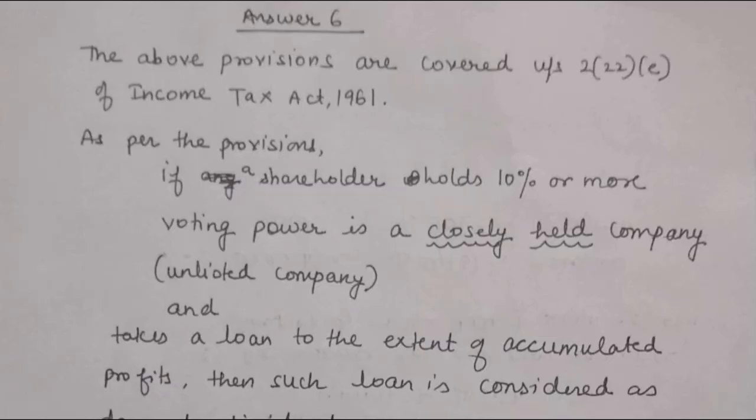Toh aap isko apni presentation mein kaise dikhane wale hain? Aap batayein that this is a closely held company, a shareholder holding 10% or more voting power is taking a loan or his concern is taking a loan, whereas this person has a substantial interest, and it will be treated as a deemed dividend. But iske upar CDT ke provisions nahi hain. So I hope aap jaldi se ye question number 6 apna complete kar lenge. Hum kal milenge question number 7 aur 8 ke saath — jaldi se 1, 2, 6 aap complete kar lijiye. Do questions aap roz karne hain, zyada samay nahi lagega — aaj toh bahut kam time lagega, maximum aadha ghanta — but aapke provisions revise hote rahenge. So I hope ki aap jaldi se ye saari cheezein kar lenge. Keep learning, stay connected and bye-bye.